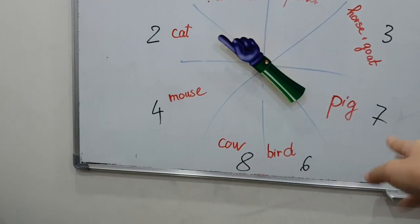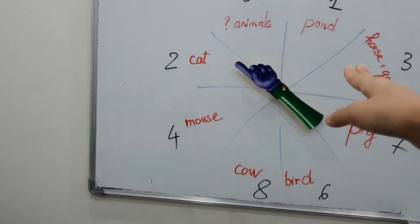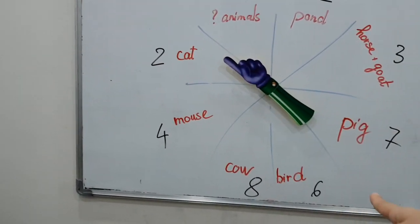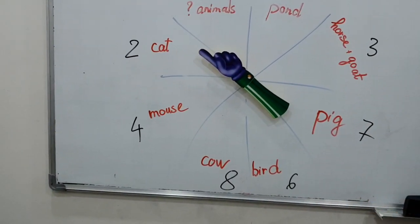So you got how many? Two at nine. At seven. Nine.